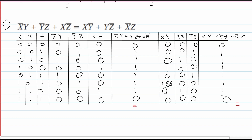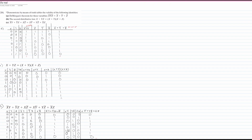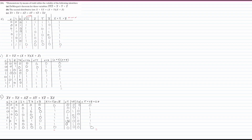We can see that these are equal to each other, so we have proven De Morgan's Law — both the first and second distributive law. And that is how we would go about solving this entire problem — parts A, B, and C completed completely.